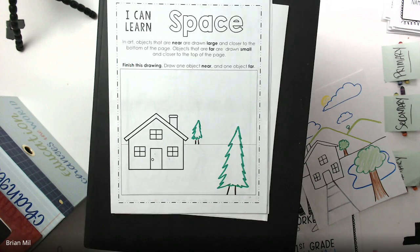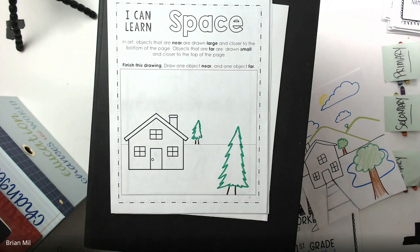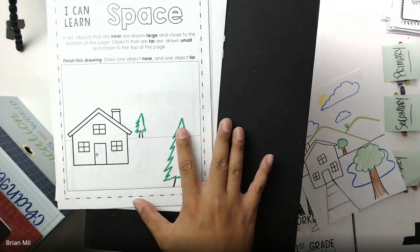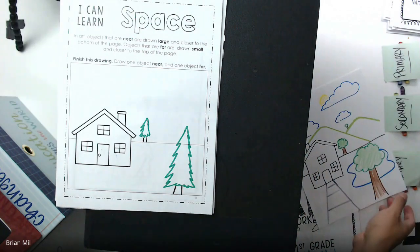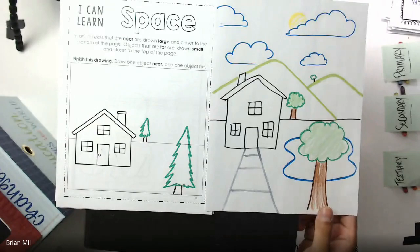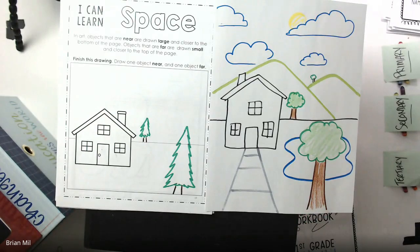So what I want you to do is that. Draw one object near and one object far. And it looks like those are the only directions that it tells us to do. At this time, once you're done with your objects, you may start decorating the page any way you want. So if you want to add hills or clouds or anything like that or a lake, you can. I can show you one more trick, though.